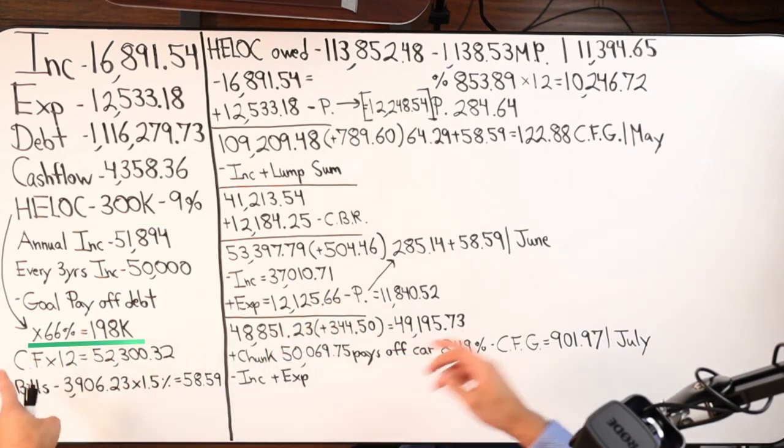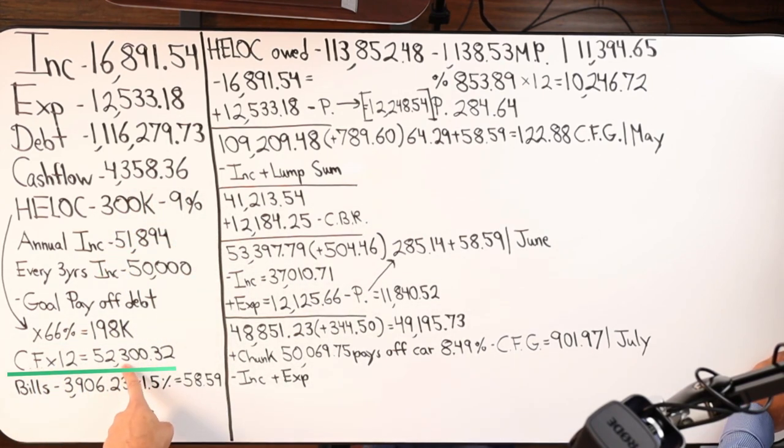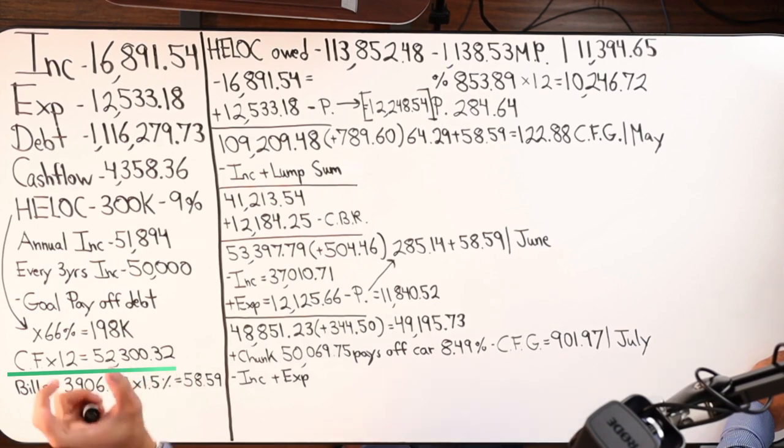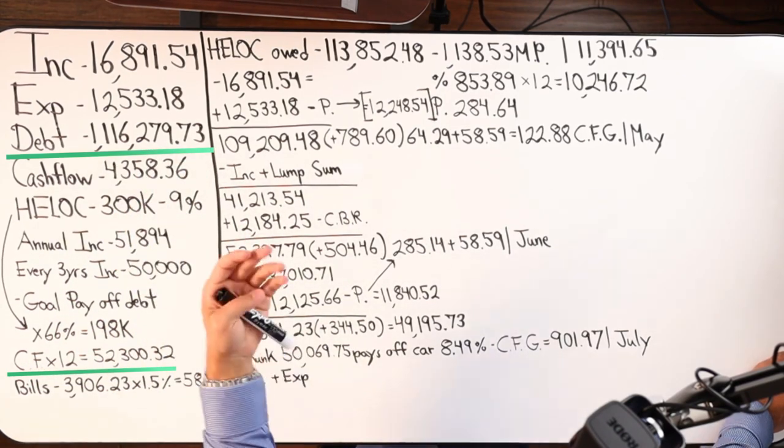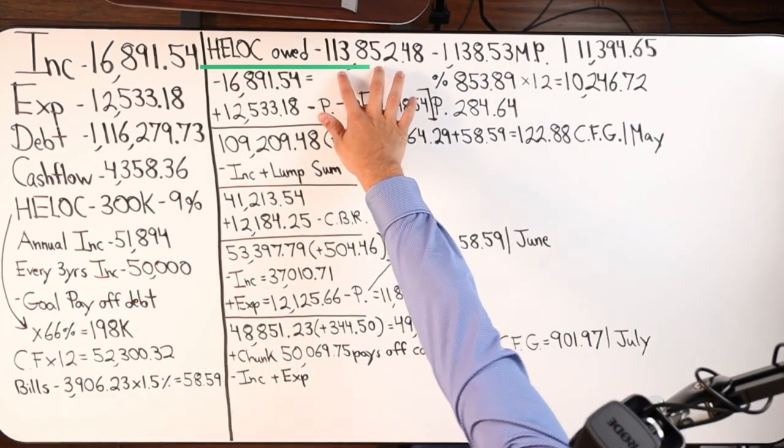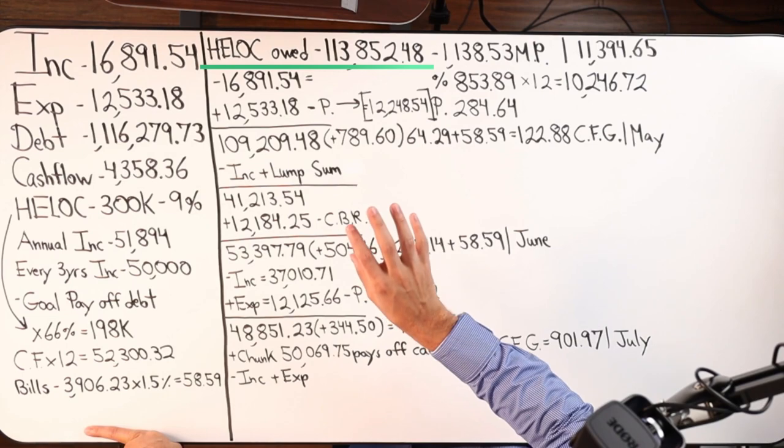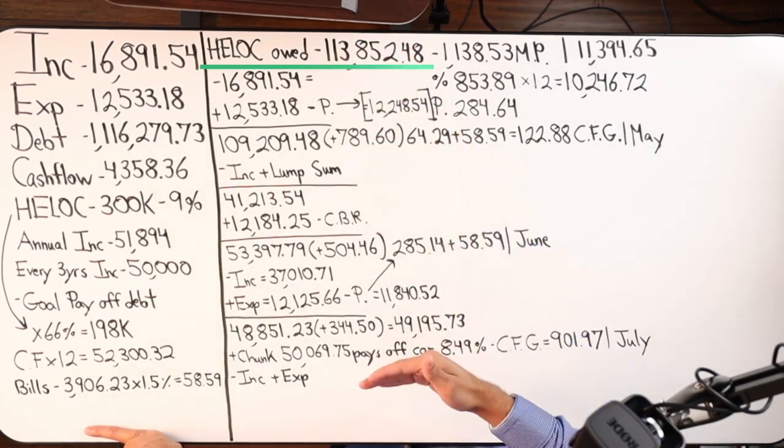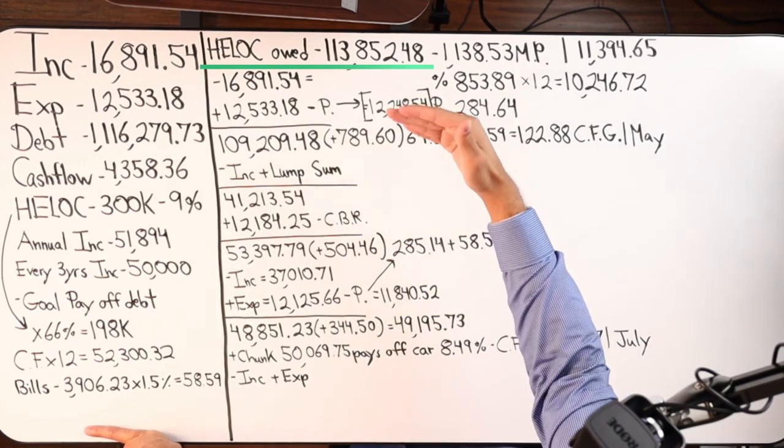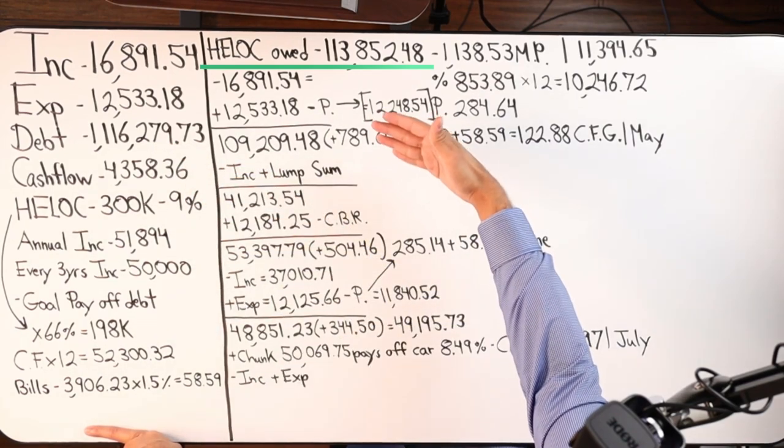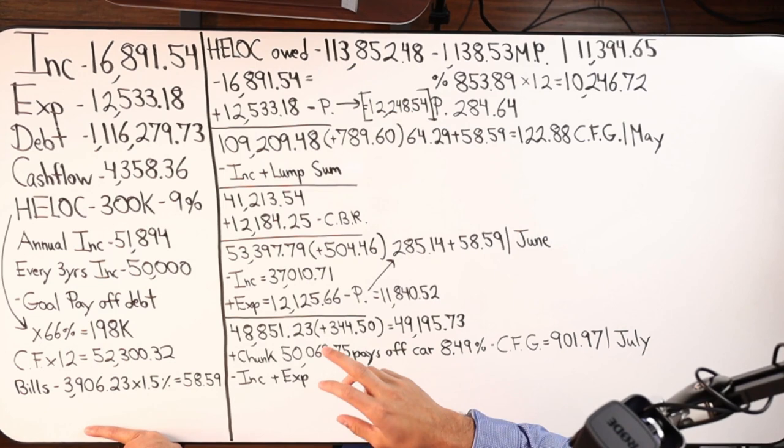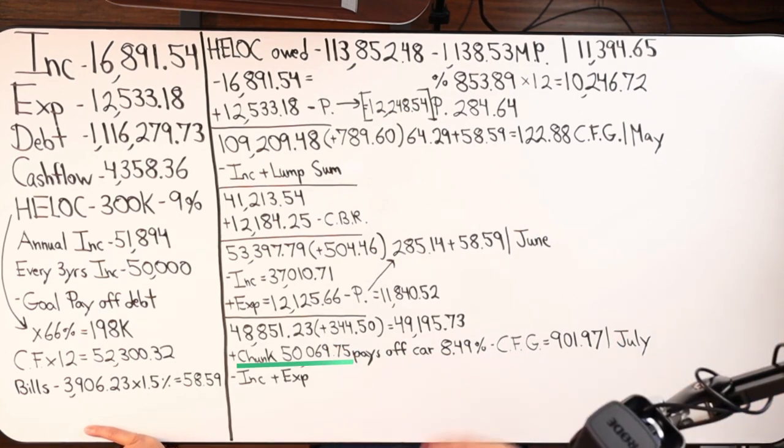So we're defining what our leverage capacity is. We have a $300,000 line of credit. Doesn't mean I should use the whole 300K. So when doing velocity banking, this is key because that's what's going to help us actually avoid paying upwards of 9% in interest by not using the whole thing, using it in chunks, small chunks. So 198 is our max. The next thing I do is I take cashflow times that number by 12, you should get $52,300.32. Anywhere between 52,000 and 198 is what we should be using to accelerate this $1.1 million debt. To pay that off.